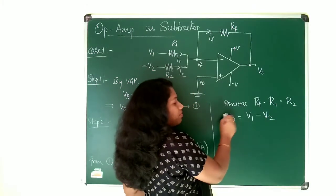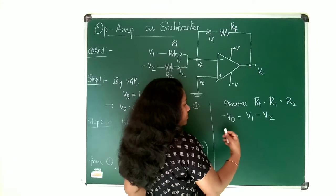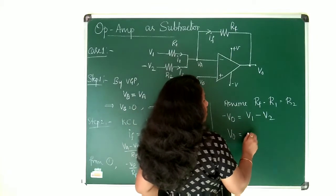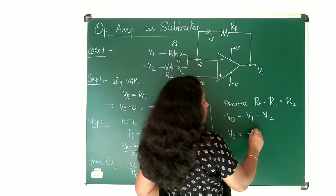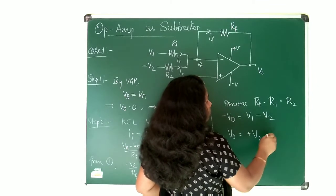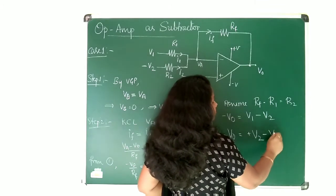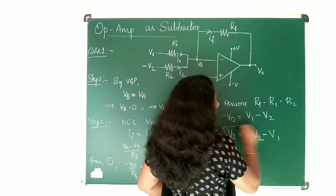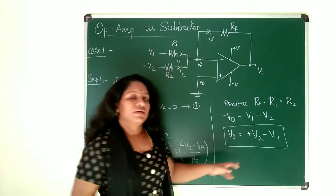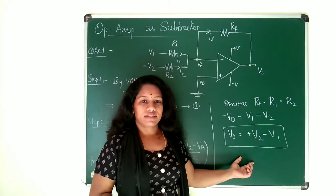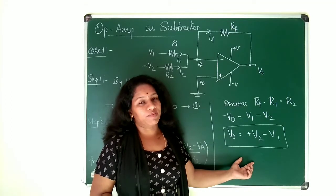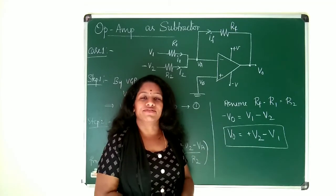So I just apply this minus to both sides. So that what you will be getting V0 is equal to minus into minus this is plus V2 and then minus V1. So V0 will be equals to V2 minus V1. So this is a subtracted value which you will be getting at the output terminal V0.